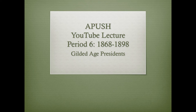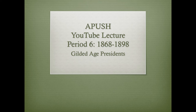Well, hello everybody. I have not recorded a YouTube video in quite some time. This is going to cover Period 6, 1868 to 1898, and I'm going to look at Gilded Age Presidents. Specifically, I'm going to cover the elections of 1876, 1880, 1884, 1888, and 1892. Now, that might sound like a lot, but I'm only going to go three and a half hours — don't worry. In all honesty, I'm just going to cover some very brief things that I think are kind of important, also kind of funny.